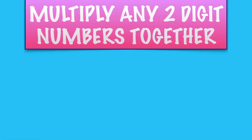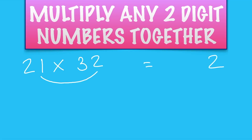Multiply any 2-digit numbers together. So let's say we have 21 times 32. 1 times 2 is 2. Then we've got our inside: 1 times 3, and outside: 2 times 2. So that's 3 and 4 makes 7. And then our first numbers: 2 times 3 is 6. So you get a nice picture like that.